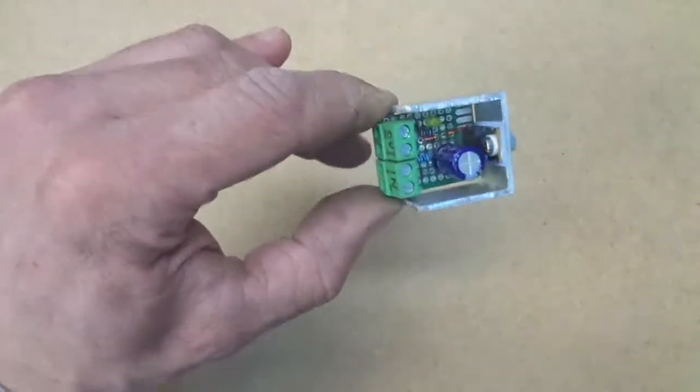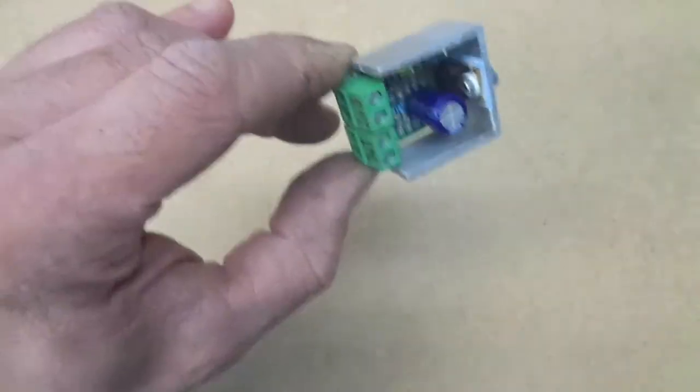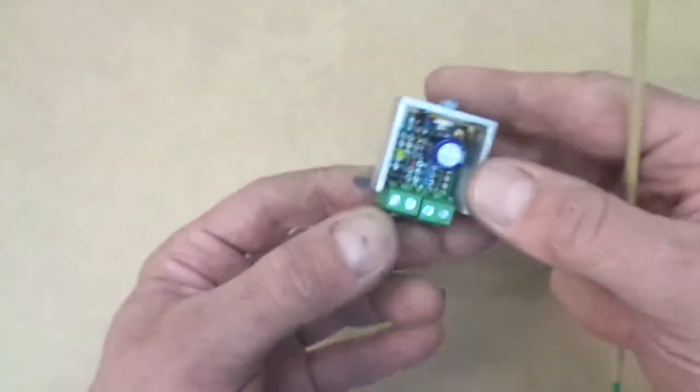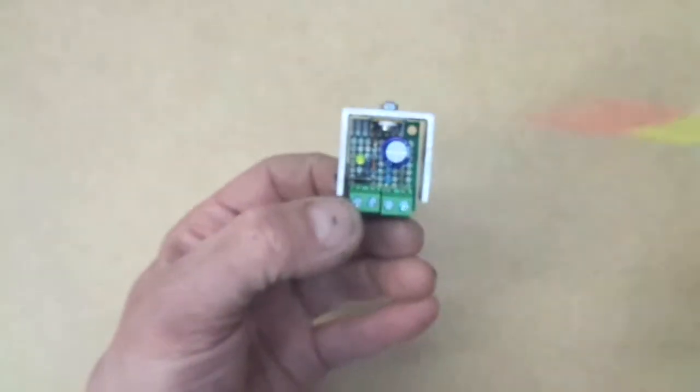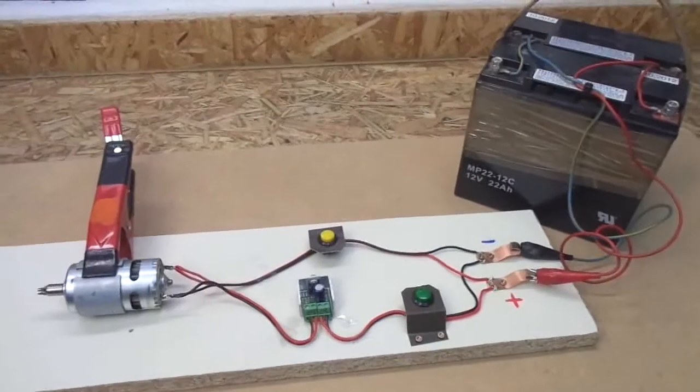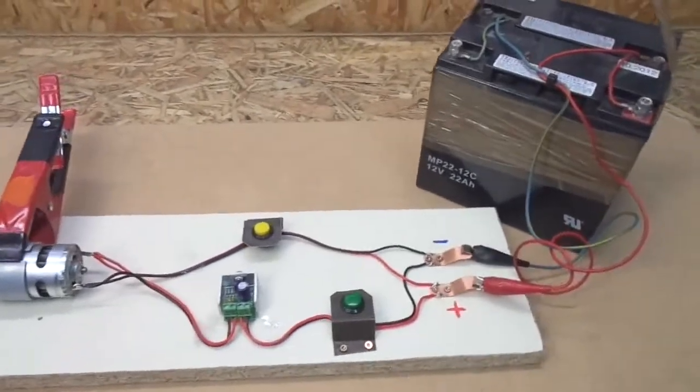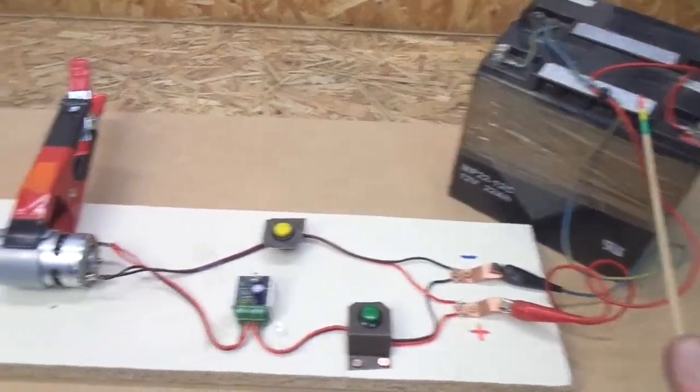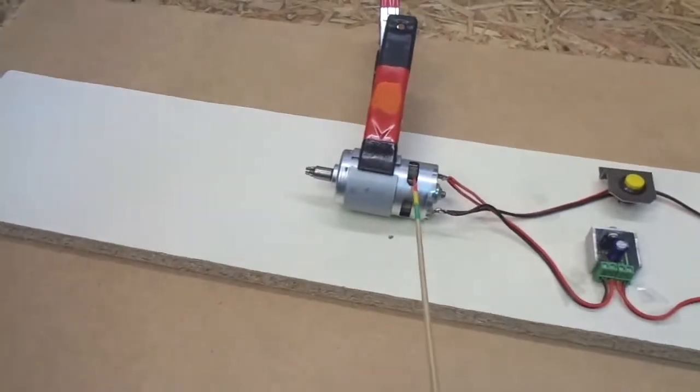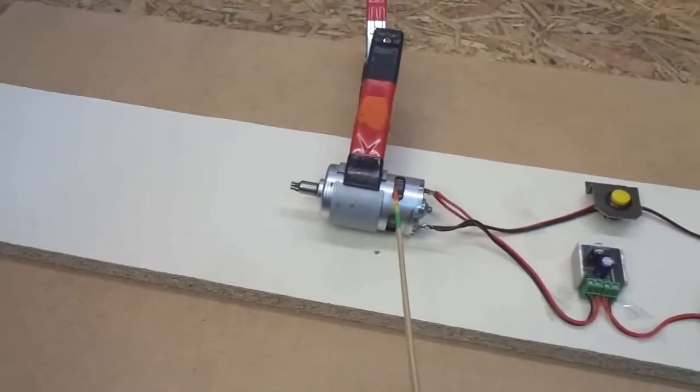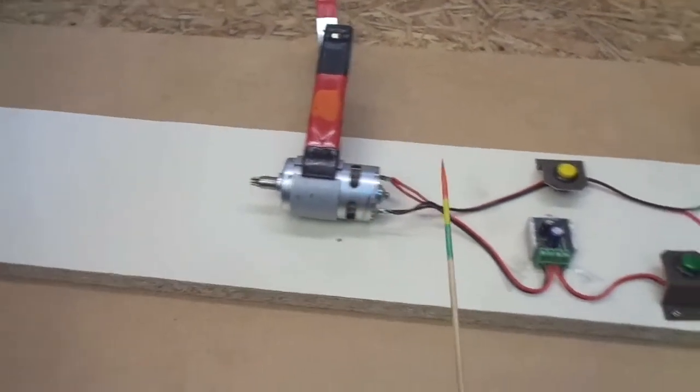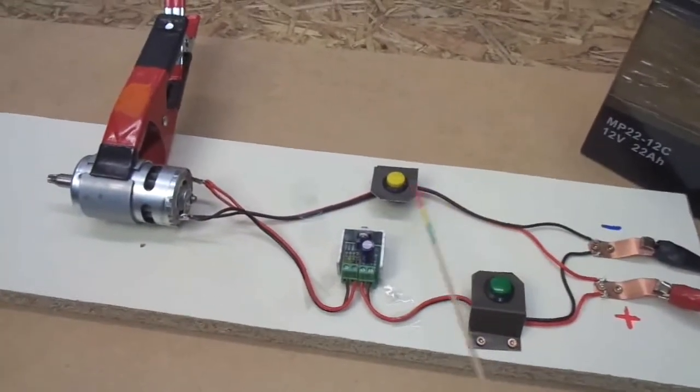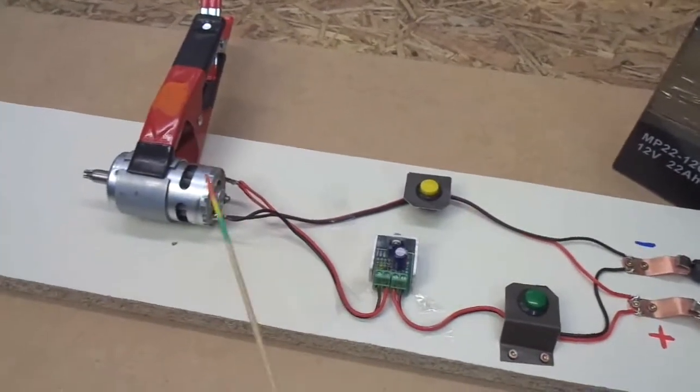And that's basically it, not much to see. So let's hook it up and see how it works and if it works. So here is my setup. I have a power source, 12 volt lead acid battery. I have here my load, it is a brushed DC motor. And for better comparison I have wired in two push buttons - one goes directly from the battery to the motor, and one goes via the soft start to the motor.